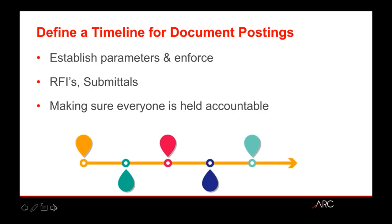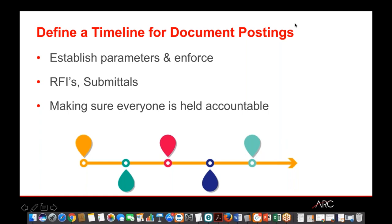Defining a timeline for document posting is about establishing parameters early on. For RFIs, determine who submits them — whether subcontractors can submit directly or everything goes through the GC — and establish a timeline for getting answers. Too often RFIs go on for weeks when they shouldn't. Simpler RFIs shouldn't take that long. Establish that timeframe early with your design team and owners, and have everybody buy into the expected response time. The same applies to submittals — set defined turnaround times and build those into your project schedule.